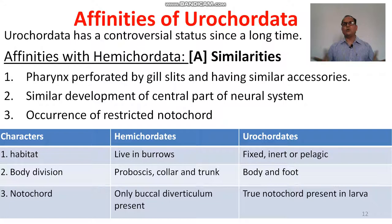Similarities: pharynx perforated by gill slits having similar accessories; similar development of the central nervous system in both; and the occurrence of a restricted notochord in both groups. Differences are in habitat, body division, and notochord.